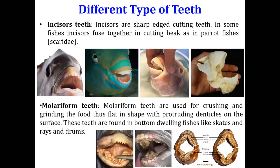The next type is incisor teeth — sharp-edged cutting teeth. One fish known as the parrotfish has a modification in its incisor teeth where all the incisors are fused together and form a beak-like structure. Because of this beak, these fishes are called parrotfish. The fishes of family Scaridae have incisors fused together forming a short beak. Normal incisors in other fishes are simply sharp-edged cutting teeth.